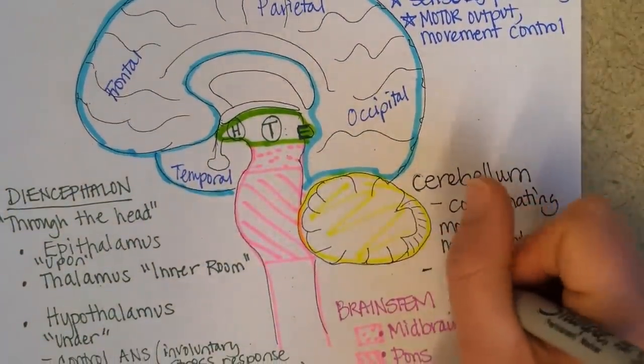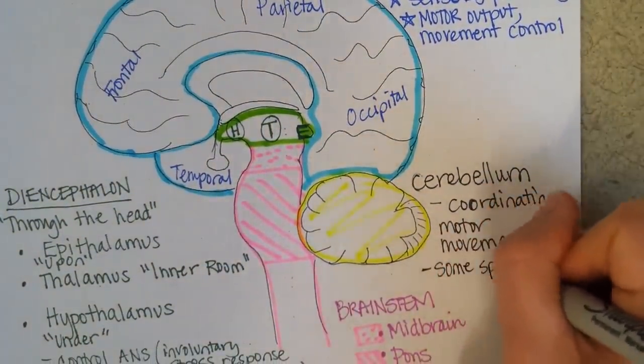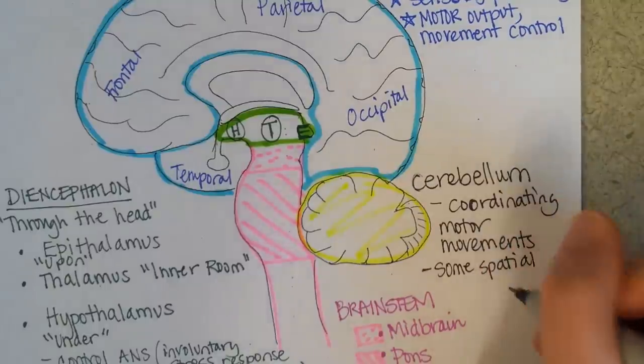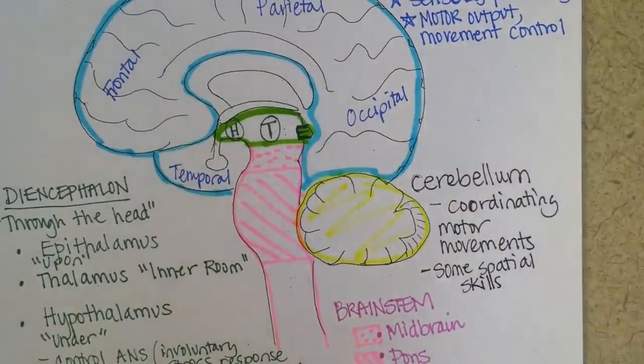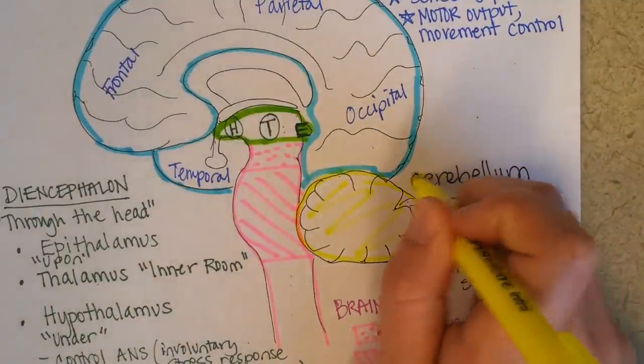We also believe that the cerebellum has some spatial skills role, like somebody that's really good at puzzles or can see things in space and rotate them around. If you're really good at the mechanisms in organic chemistry or stereochemistry and really moving things around in your head, your cerebellum has a lot to do with that.